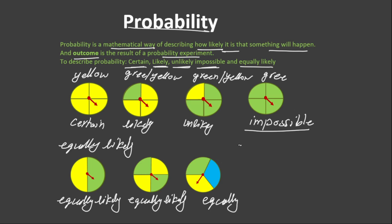For example, if we toss a coin, there are two possible outcomes. The coin will land either heads up or tails up. So for the coin also, we can say that the possible outcome is equally likely, because both of them have got equal chance to happen.